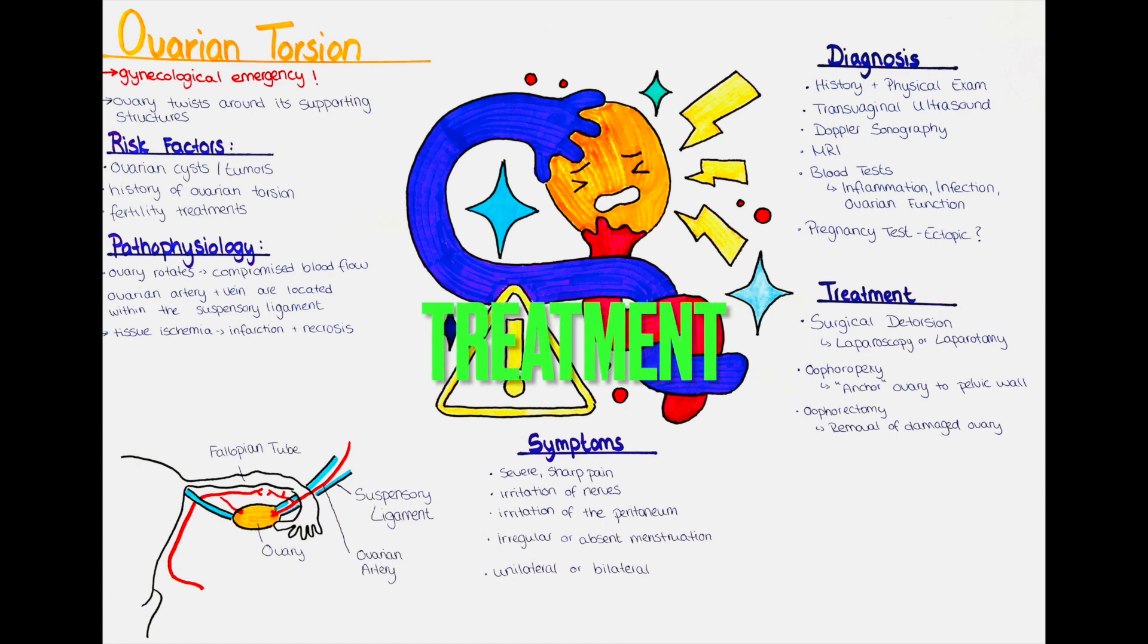How can we treat ovarian torsion? The treatment of ovarian torsion typically involves surgical intervention to restore blood flow to the ovary and prevent further damage. The first step in surgical treatment is detorsion, which involves untwisting the ovary and its supporting structures to restore blood flow. This can be done using minimally invasive techniques such as laparoscopy or through open abdominal surgery called laparotomy. During the procedure, we carefully untwist the ovary and assess its viability.